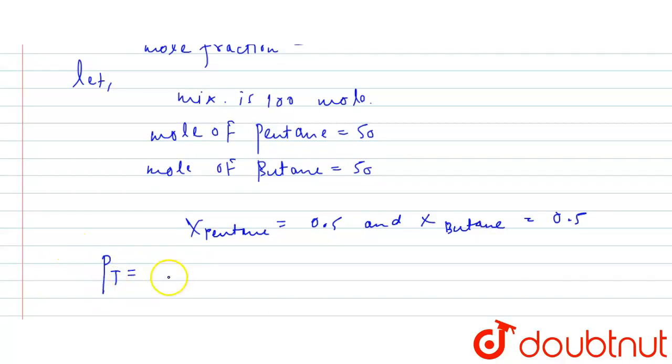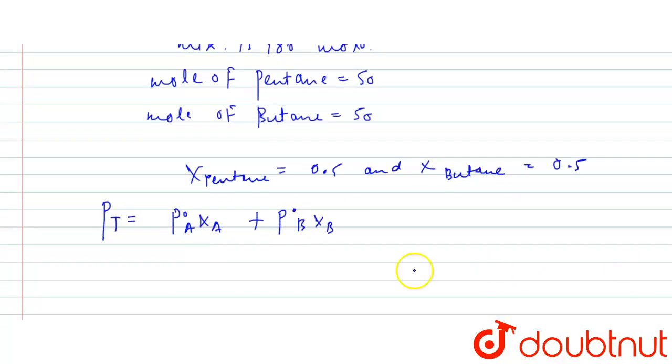Total pressure is equals to P naught A chi A plus P naught B chi B. So the pressure equals 600 multiplied by 0.5 plus 1800 multiplied by 0.5, which equals 1200.